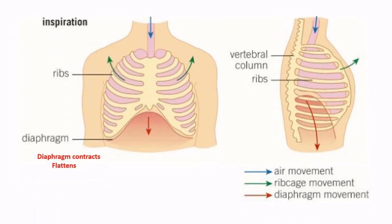When we breathe in, our diaphragm muscle contracts and flattens downwards. The external intercostal muscles also contract — these are the muscles between each pair of ribs, the meat that some of us eat when we have a barbecue rack of ribs. The ribcage is pulled up and out. Feel it for yourself as you breathe in now. Feel your chest rise and expand.